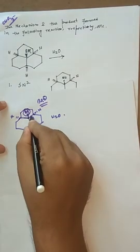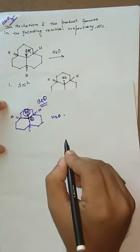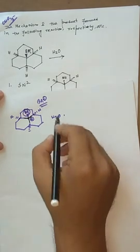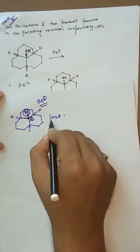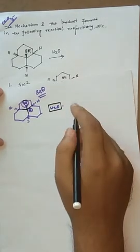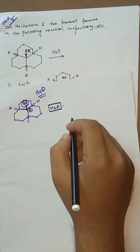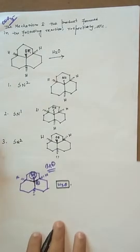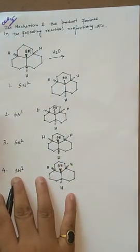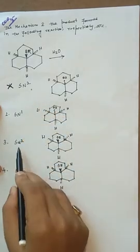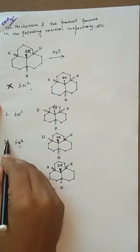Since there is a chance of forming a 3° carbocation, we can say the reaction mechanism is SN1. An additional advantage is that H₂O is a very weak nucleophile. Because the nucleophile is very weak and a 3° carbocation can form, we can easily say this is SN1 mechanism. So we can eliminate option 1 (SN2) and option 3 (SN2).